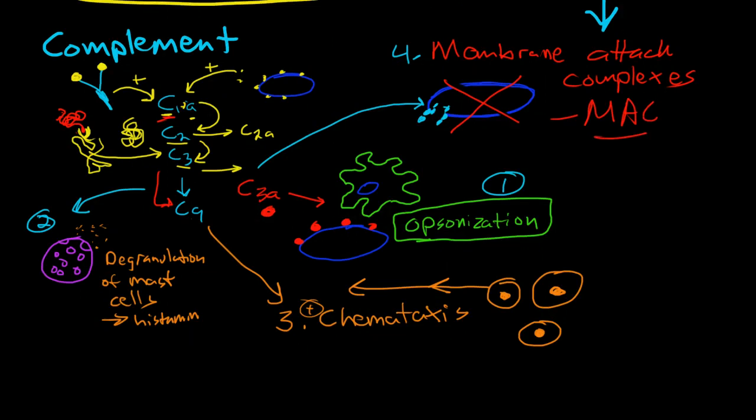So those are the basic elements of the innate immune system. In the next slide, I'm going to put it all together and talk about how the innate immune system works when there is a specific injury, walking through it step by step, which will give you an idea of how all the pieces work together.